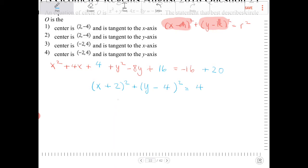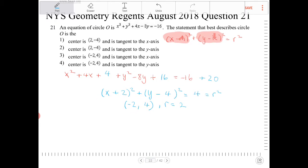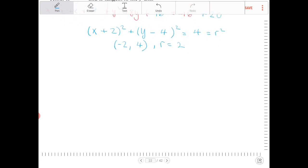So now I can identify what the center is. The center is negative 2, comma 4. And the radius is equal to 2, because r squared is equal to 4. So the question is not asking us to identify both the center and radius, but it's asking for us to identify the center and which axes the circle is going to be tangent to. So what I'm going to do is I'm going to quickly just sketch this out.